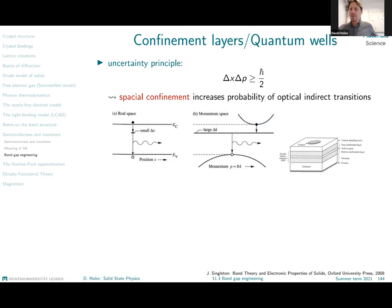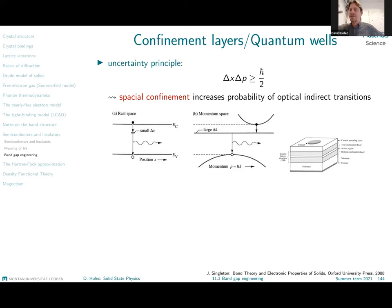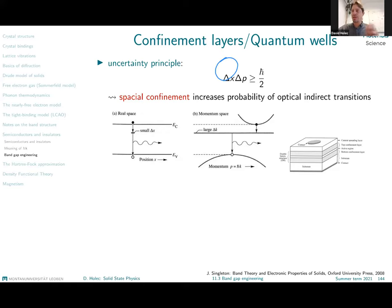This principle is used for designing semiconducting devices, which are typically layered structures based on different semiconductors with different band gaps and different band alignments. For more advanced materials, not only layered structures but even three-dimensional confinements are used. You have probably heard of quantum wells, and very popular these days, quantum dots — where confinement is three-dimensional. Quantum rods provide two-dimensional confinement, and quantum dots provide three-dimensional confinement of electrons.